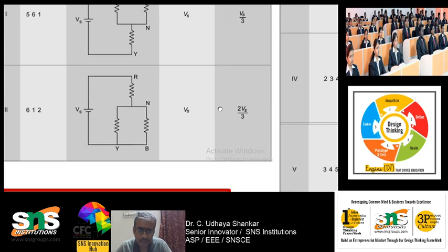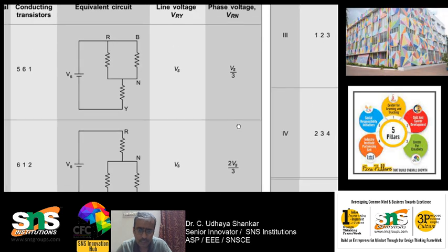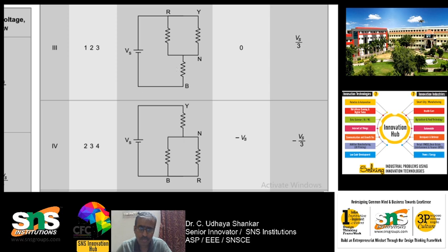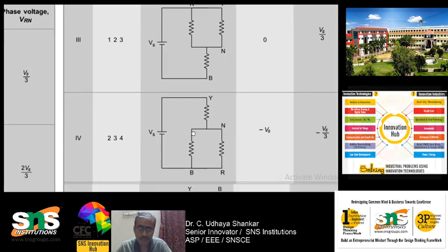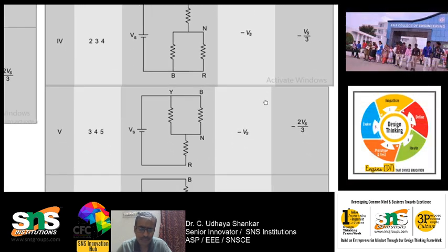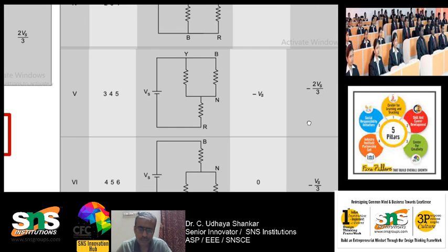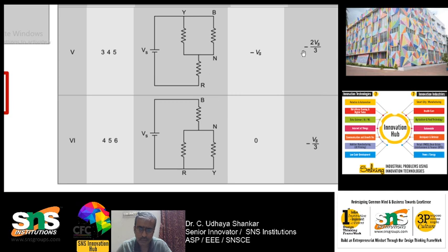Similarly, when switching sequence 6, 1, 2 is active, the line voltage is V_S and the phase voltage is 2V_S/3. For interval 1, 2, 3 the line voltage is 0 and the phase voltage is V_S/3. For interval 2, 3, 4 the same pattern continues. By applying Kirchhoff's voltage law for all six intervals, you will obtain the complete voltage profile — this is shown in the table. I can show the different voltages in the PPT, but for detailed derivation please refer to the textbook.